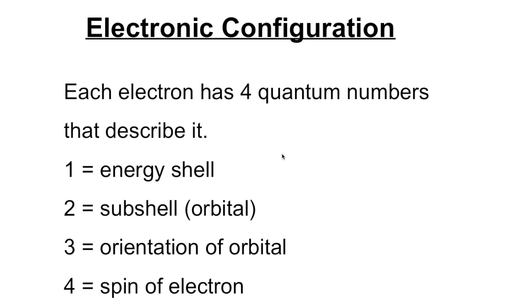Each electron has four quantum numbers that describe it. The first is the energy shell, the second is the subshell or orbital, the third is the orientation of that orbital in space, and the fourth is the spin of the electron. No two electrons can have the same four quantum numbers - it's like their address, describing where they are in space.